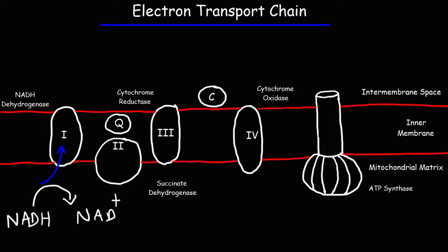Those electrons will travel to ubiquinone, represented by the symbol Q. Ubiquinone is a mobile electron carrier. It moves to complex one, picks up the electrons, and then carries them to complex three. Keep in mind, electrons have a negative charge and can't move on their own along the inner membrane, because the membrane is made of phospholipids whose nonpolar tails don't interact well with negatively charged electrons. So the electrons must be carried by a mobile electron carrier — in this case, ubiquinone.